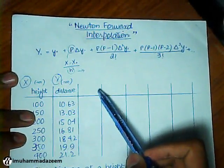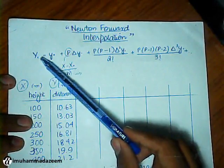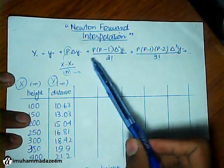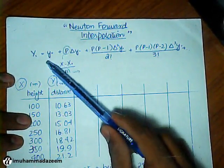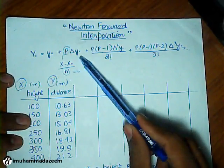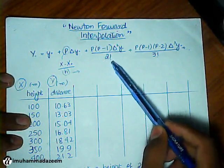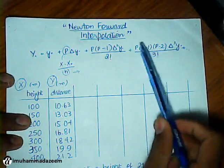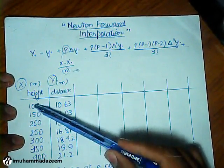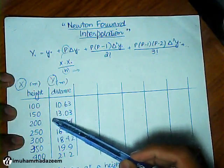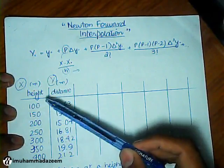The formula for the Newton forward interpolation is Y of X equals Y naught plus P delta Y plus P(P minus 1) delta square Y over 2 factorial and this goes on. P can be found using X minus X naught over H. H is the difference here, H is the 50 here.